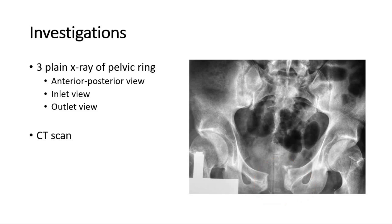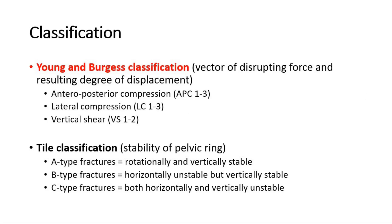Two classification systems are commonly used to describe pelvic ring injuries. Young and Burgess classification is based on the vector of the disrupting force and the resulting degree of displacement, whereas Tile classification is based on the stability of the pelvic ring.